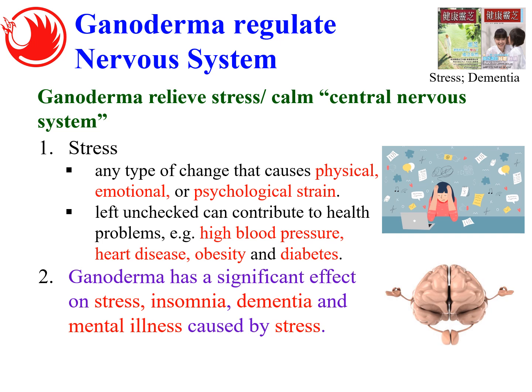Number one: Ganoderma has been proven to regulate the nervous system. It can relieve stress and calm the central nervous system. Calming the central nervous system has a significant effect on stress, insomnia, dementia, and mental illness caused by stress. Stress can cause changes to the physical, emotional, and psychological aspects of health. If left unchecked, stress may cause many other health problems like high blood pressure, heart disease, obesity, and diabetes. So Ganoderma can work to a certain extent like an anti-depressant, as it can calm the central nervous system.